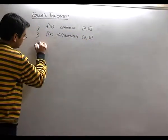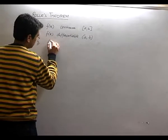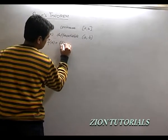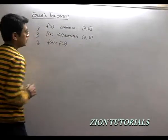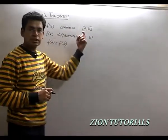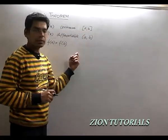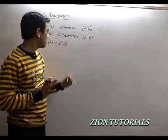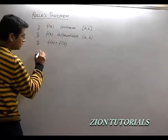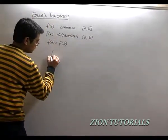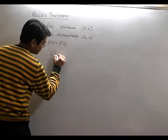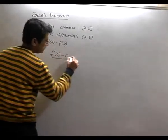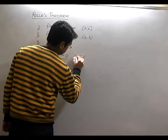The third condition is that f(a) is equal to f(b). If all three conditions are satisfied, we can say that f'(c) is equal to 0, where c lies between a and b.